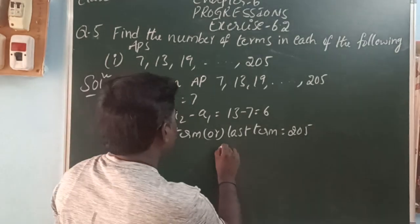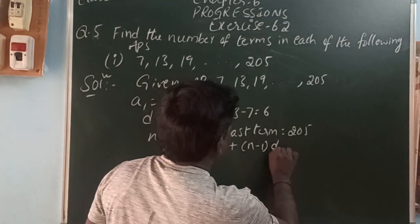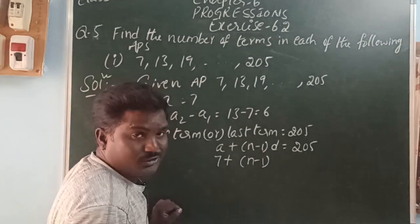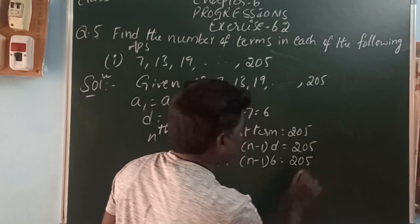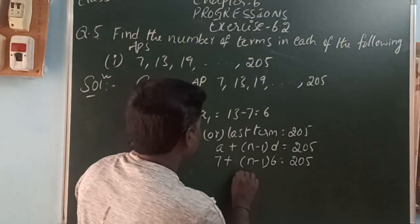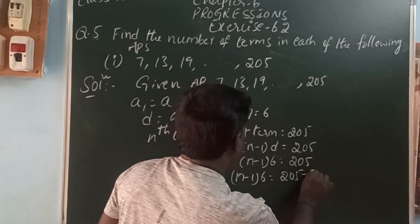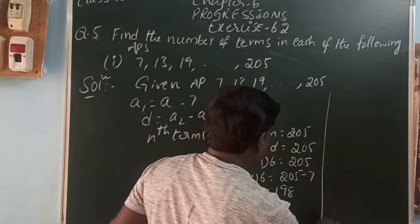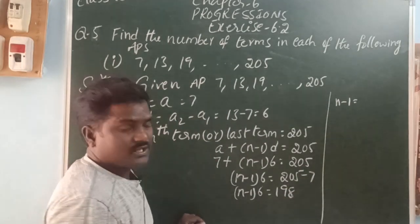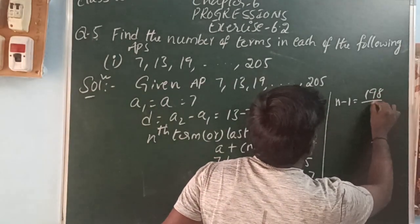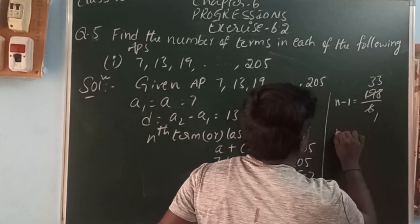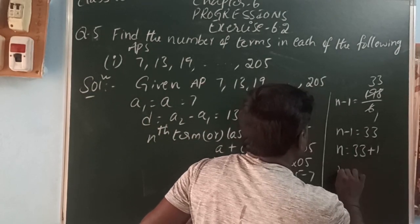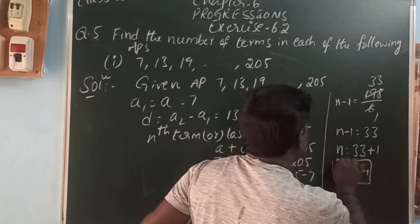So the last term or nth term formula: A plus n minus 1 into D is equal to 205. So 7 is going to the other side as minus: n minus 1 into 6 is equal to 205 minus 7, which is 198. So n minus 1 is equal to 198 by 6. Dividing: 198 by 6 equals 33. So n minus 1 is equal to 33, therefore n is equal to 33 plus 1, which is 34. So how many terms in the given AP? 34.